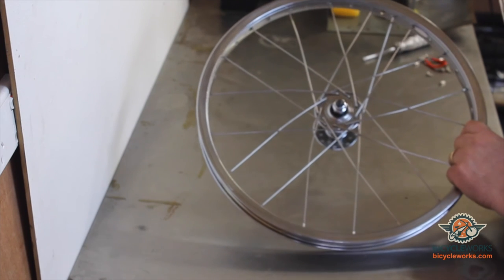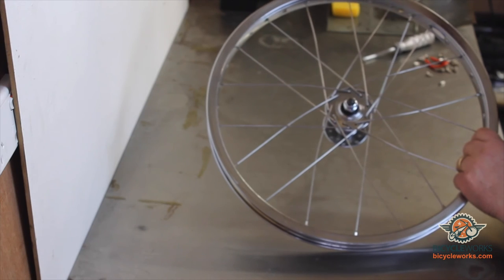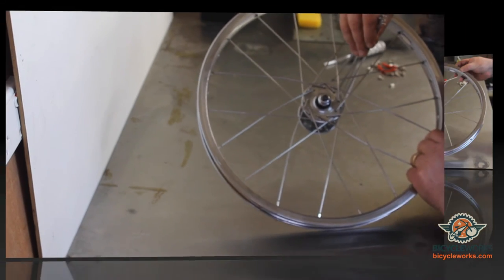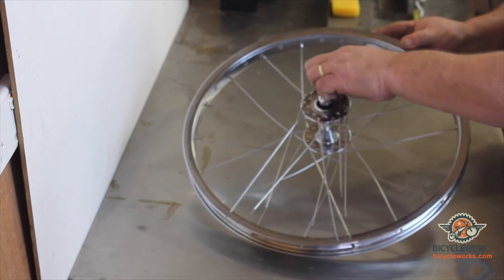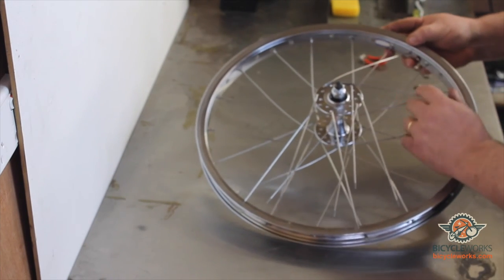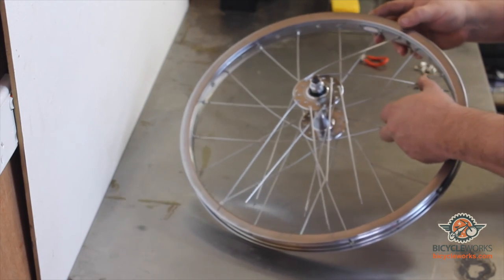Now you've got your guide spoke in, you want to take your next eight spokes and fill every second outside hole. There we have it. Now starting at the guide spoke, go to every fourth spoke hole and work your way around to the end.